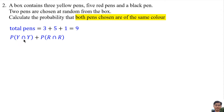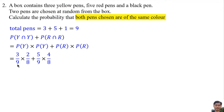The probability of getting 2 yellow pens is the probability of the first yellow pen times the probability of the second yellow pen. The probability of getting the first yellow pen is 3 over 9. After getting the first yellow pen, there are 2 yellow pens remaining and 8 total pens remaining. Similarly for red pens. So the total probability is 13 over 36.